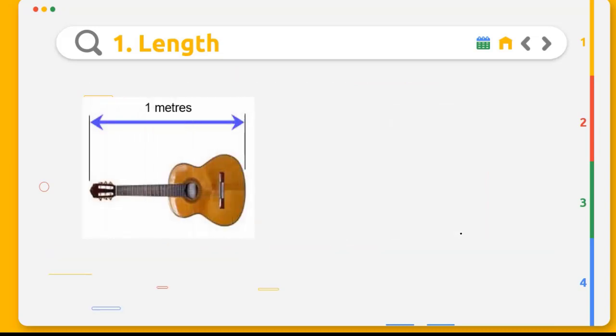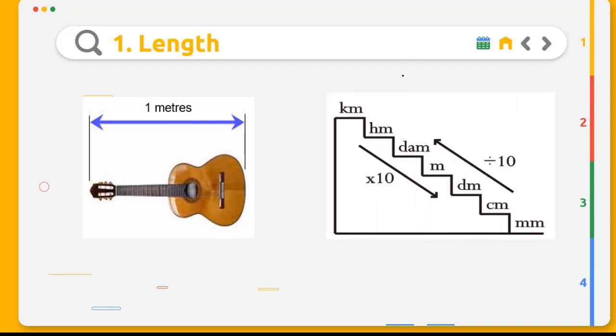This guitar has a weight of 1 m. We also can convert this unit to another length unit measurement. There are seven units of measurement in length: kilometer, hectometer, decameter, meter, decimeter, centimeter, and millimeter.